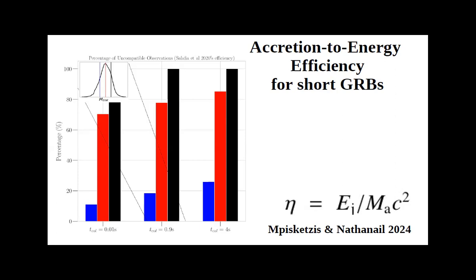Question about ISM effects on jet propagation: the interstellar medium density is a parameter in afterglow modeling. More ISM means the afterglow cannot be seen as far away; less ISM makes it easier to observe from greater distances.